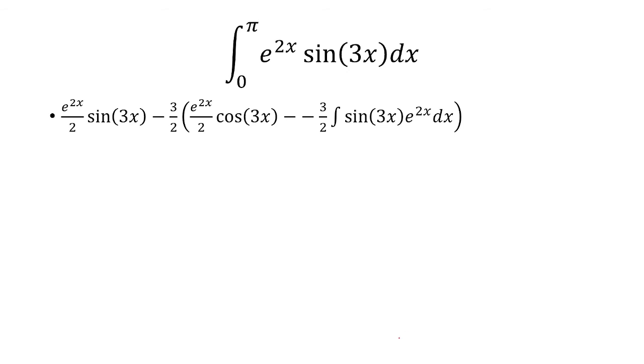Now we just need to simplify. So we're going to apply this negative 3 halves to both e to the 2x over 2 cosine 3x, and to this part. So we get negative 3 fourths as a coefficient of the first term here, and then negative 3 halves times minus negative 3 halves becomes negative 9 fourths.